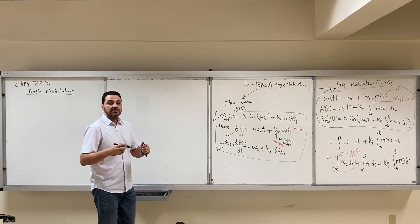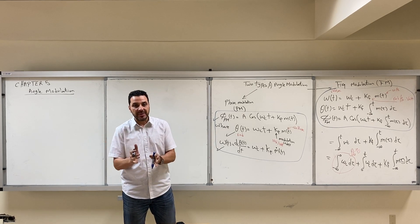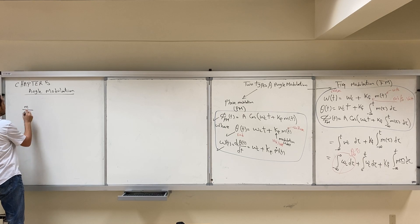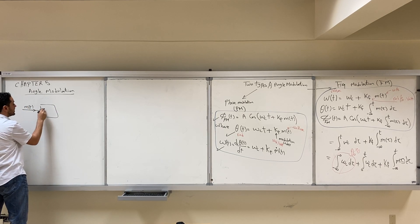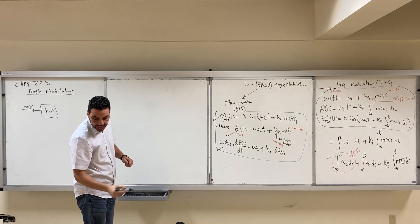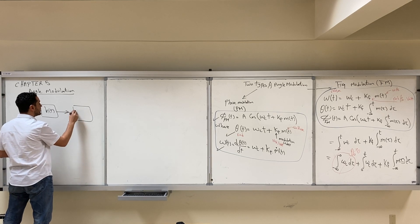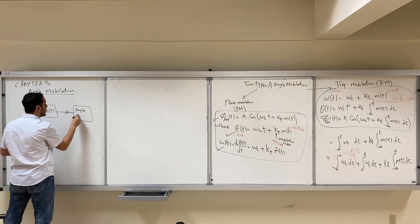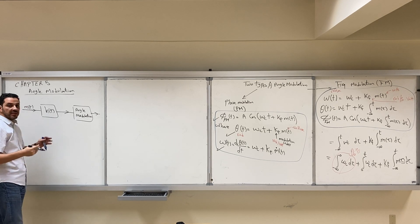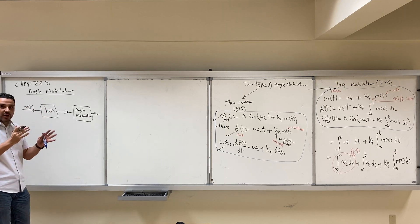In general, angle modulation can be done by processing m(t) using any processing technique. If we limit our processing to linear systems, angle modulation can be done by passing m(t) through a linear system with impulse response h(t), and then using this to modulate the angle. This is the general form of angle modulation when we limit our focus to linear systems.